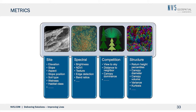There are a whole lot of spectral metrics related to brightness, band ratios, texture, and edge detection. There are also competition metrics: how does that canopy relate to adjacent canopies — view to sky, distance to neighbor, canopy dominance. And there are LiDAR metrics such as height percentiles, canopy diameter, canopy volume, variance, and kurtosis. There are hundreds of metrics for each of these that you can put into your analysis.